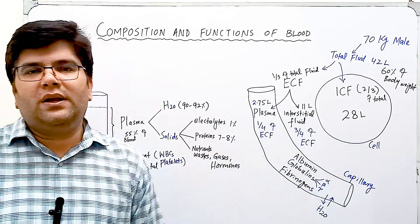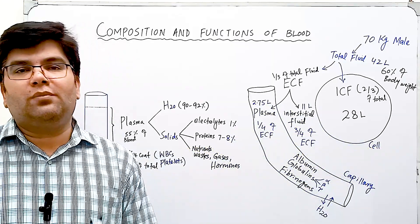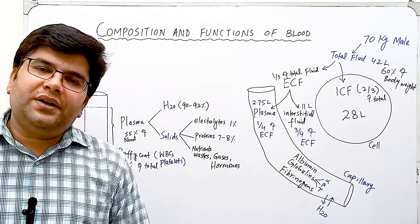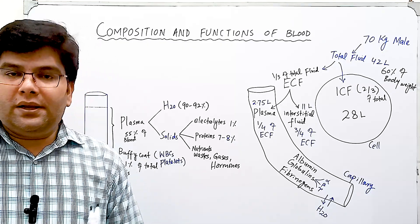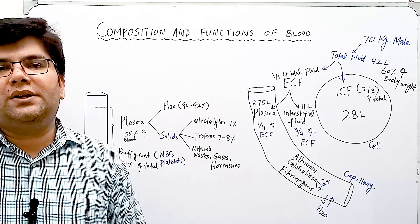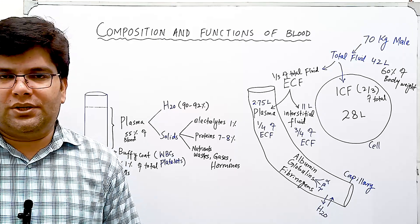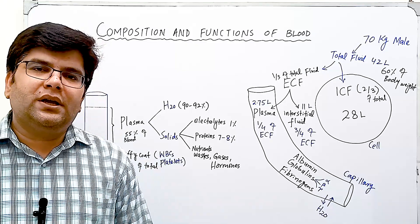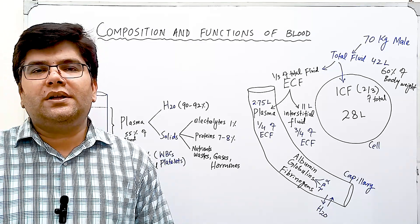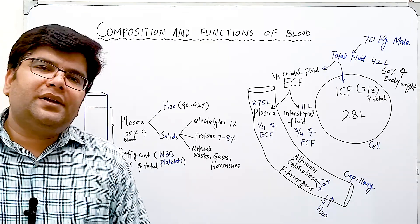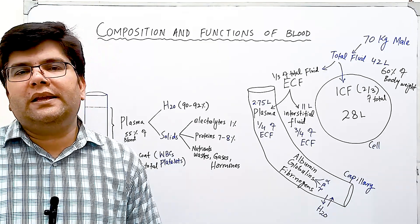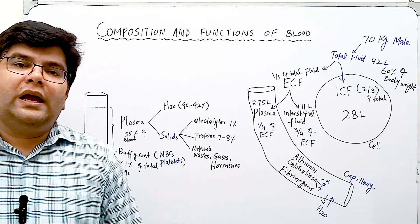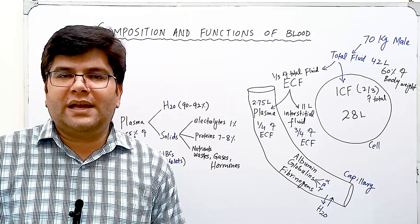Let's talk about some properties of blood. Blood is 8 percent of total body weight. The color of arterial blood is scarlet red and venous blood is purple red. The volume of blood in adult males is 5.5 liters, in adult females is 5 liters. The pH is 7.4 and blood is four times more viscous than water.